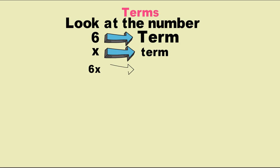Now, 6 multiplied by x — how many terms are there? Is it 2 terms or 1 term? When we have 6 multiplied by x, this is one term.